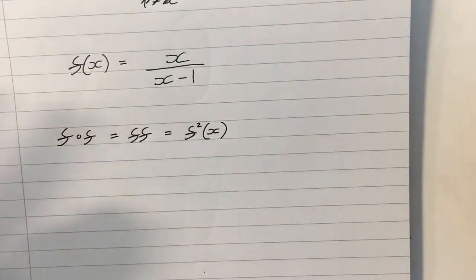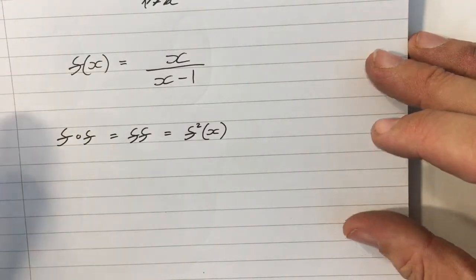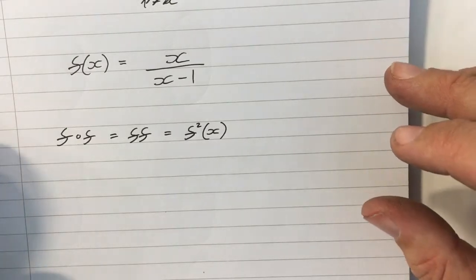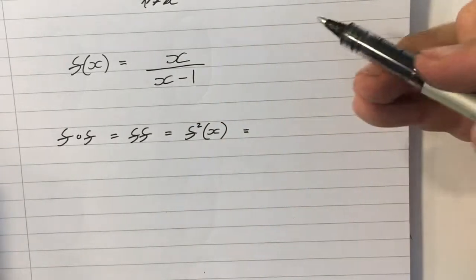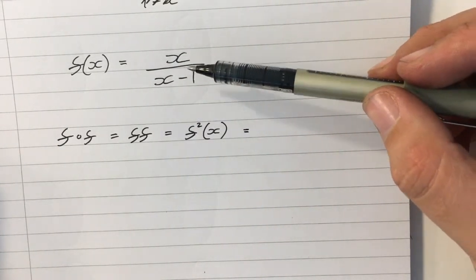Which is not a great notation in my opinion, because it could be interpreted as f of x times f of x, but it's not. It means f composited with f, which means we're going to take the definition of f, and we're going to plug it into x in f.